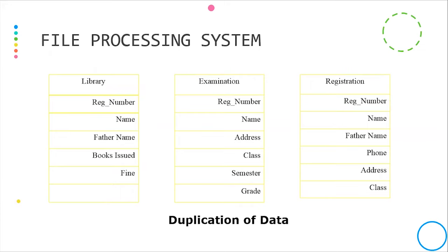Now, you can see the files in the file processing system. In the file processing system, our registration number is repeated every time. Name and father name are also repeated across departments. This is duplication of data, which is why we use the database.